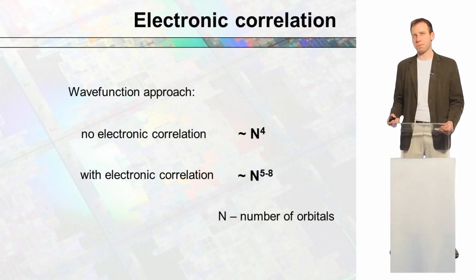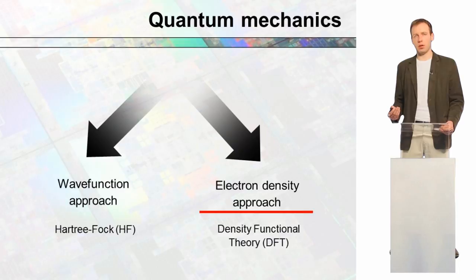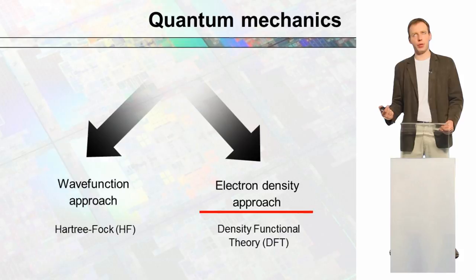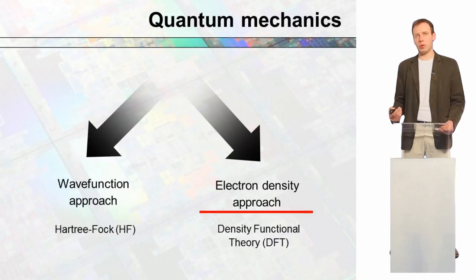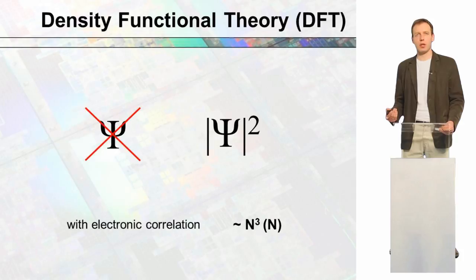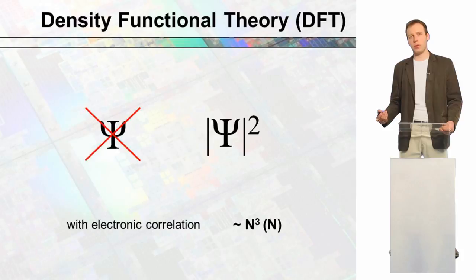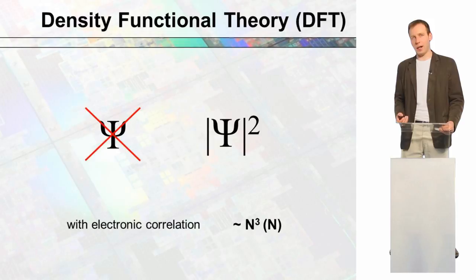The second large methodology in quantum mechanics is the electron density approach. In this approach, we do not have a concept of wave function; instead, we have the electronic density. With electronic correlation included, the complexity of the calculations increases only as n to the 3. There are also linear-scaling approaches in which the complexity increases linearly with the number of atomic orbitals.